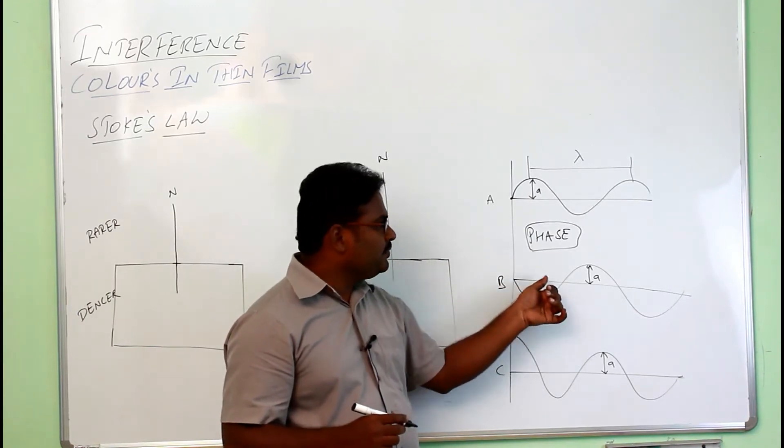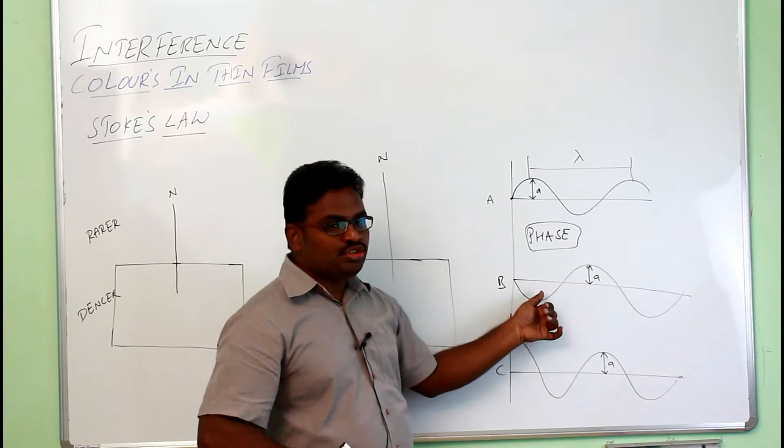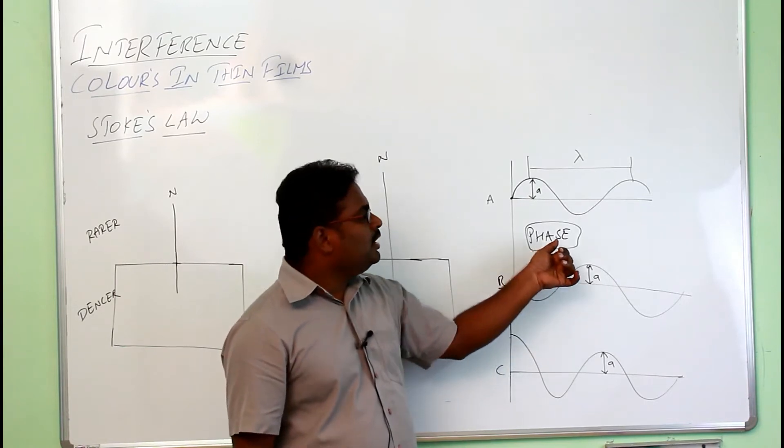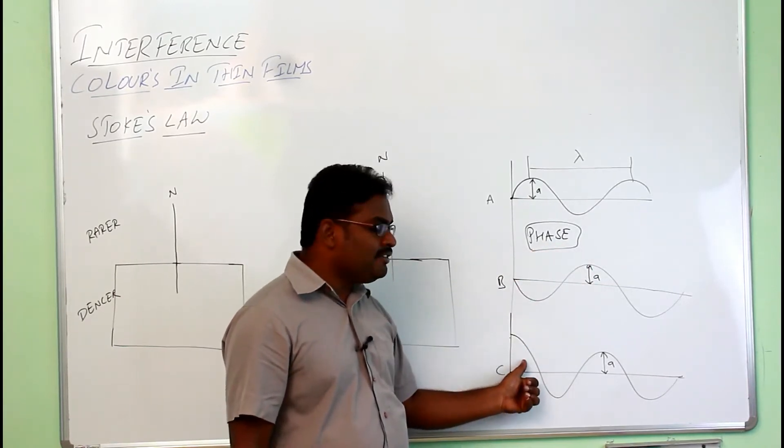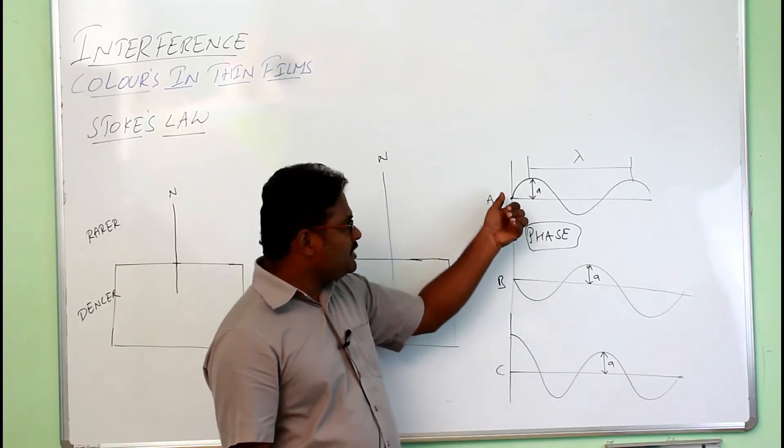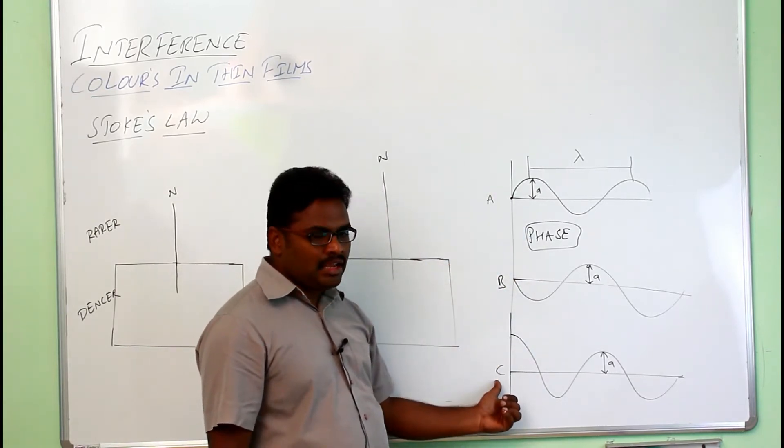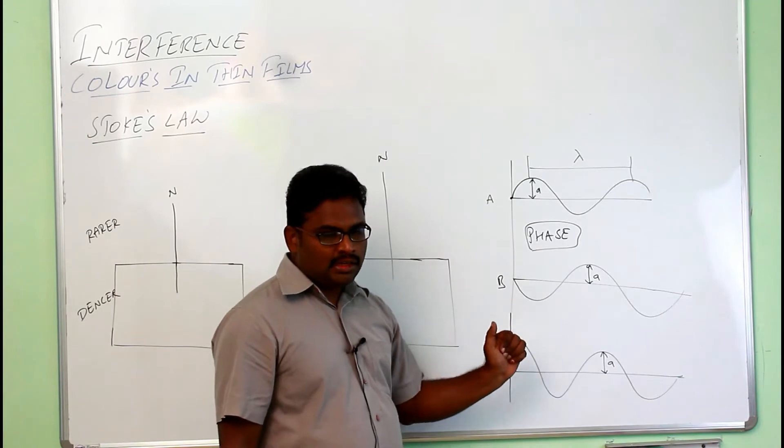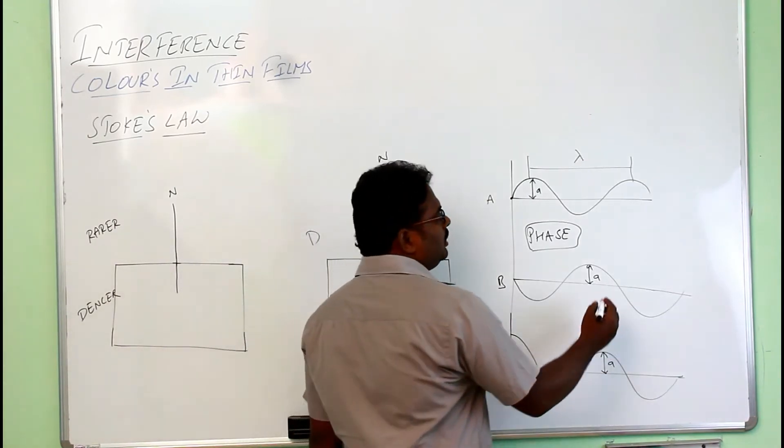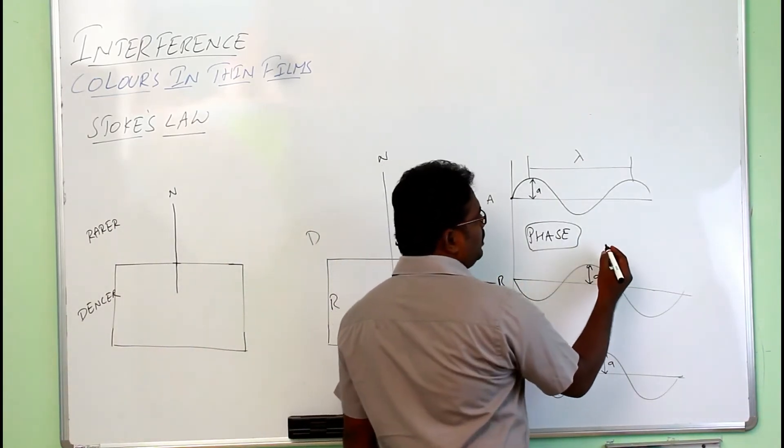This is the phase. The phase difference between these two waves can be known as 180 degrees. And consider this one, it is starting from 90 degrees. The phase difference between wave A and wave C is 90 degrees.